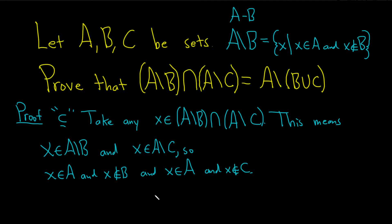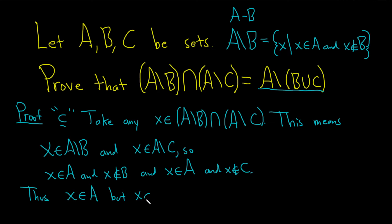What are we trying to show? We're trying to show that x is in A but it's not in the union. What does it mean to not be in the union? Well, if it's in the union it's in B or it's in C. If it's not in the union, it's not in either. So x is not in B and it's not in C. Thus x is in A, and x is not in B and x is not in C.